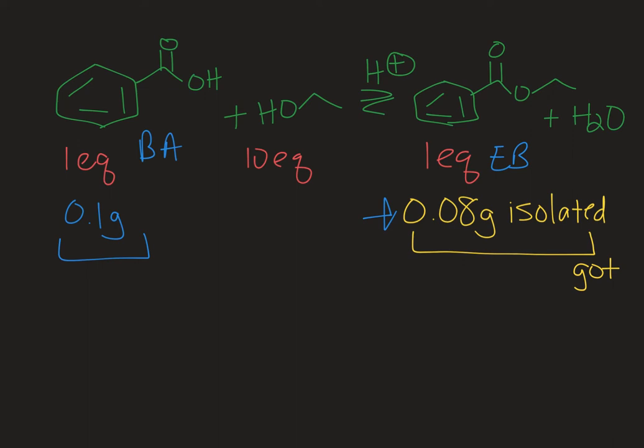So right now I'm gonna figure out my theoretical yield. So I'll start with my 0.1 grams of benzoic acid. So I'm gonna say BA for benzoic acid and then I'm gonna use the molar mass of benzoic acid so that I can go into moles so that I can do an apples-to-apples comparison. So there are 122 grams of benzoic acid per one mole of benzoic acid.